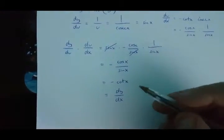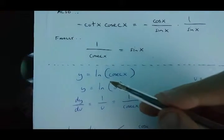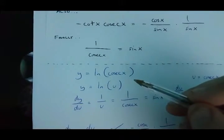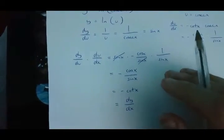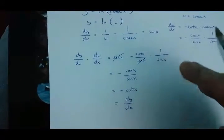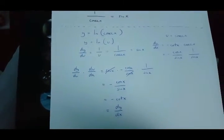So, this means that minus cot x is the derivative of y equals ln cosec x. Now, if you have any questions related to this video, please leave your comments below. Thank you for watching this video.